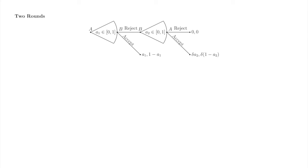The players begin the game bargaining over pi, or a dollar, or some such. If they can't reach an agreement in the first round — i.e., if B rejects A's offer — the dollar is worth less because of the delay in dividing it. In the first round, A offers shares of a dollar: A1 to A and 1 minus A1 to B. In the second round, B offers shares of delta dollars: A2 to A and 1 minus A2 to B. If A accepts B's offer, A's payoff is A's share A2 multiplied by the value of the pie, delta; and B's payoff is B's share 1 minus A2, multiplied by the value of the pie, delta.